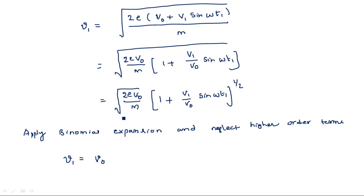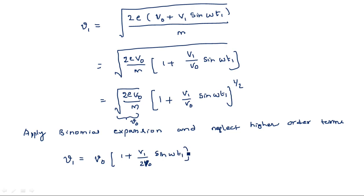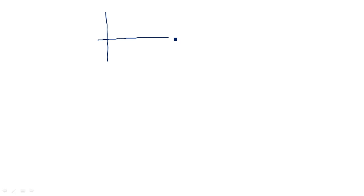After the binomial expansion and neglecting higher order terms, the first term — the square root of 2eV naught over m — refers to the velocity of the electron before RF input, which is small v naught. So the result becomes: v1 equals v naught times (1 plus V1 divided by 2V naught times sine omega t1). This is the velocity of the electron traveling from cathode to anode after the application of RF input voltage.